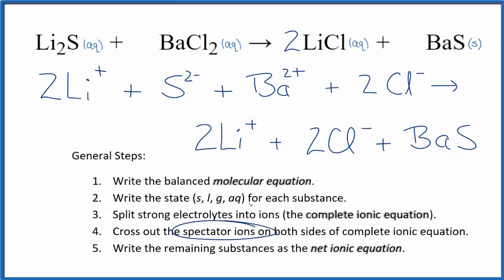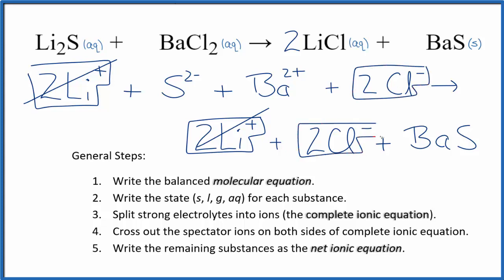Now we can cross out the spectator ions. They're on both sides. So we have the reactants and then the products. In the reactants I can see I have two lithium ions. Again in the products, two lithium ions. These are spectator ions. We can cross those out. Reactants, two chloride ions. And again in the products, two chloride ions, spectator ions. As we cross them out, what's left, that's the net ionic equation for Li2S plus BaCl2.